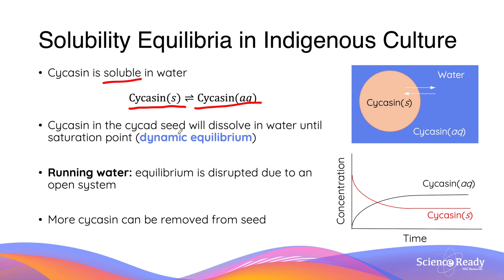When the reaction is at equilibrium, the rate of the toxin's dissolution equals the rate of its formation in the seed. This is not particularly helpful, as no further amount of toxin can be removed if the water becomes saturated with the toxin.